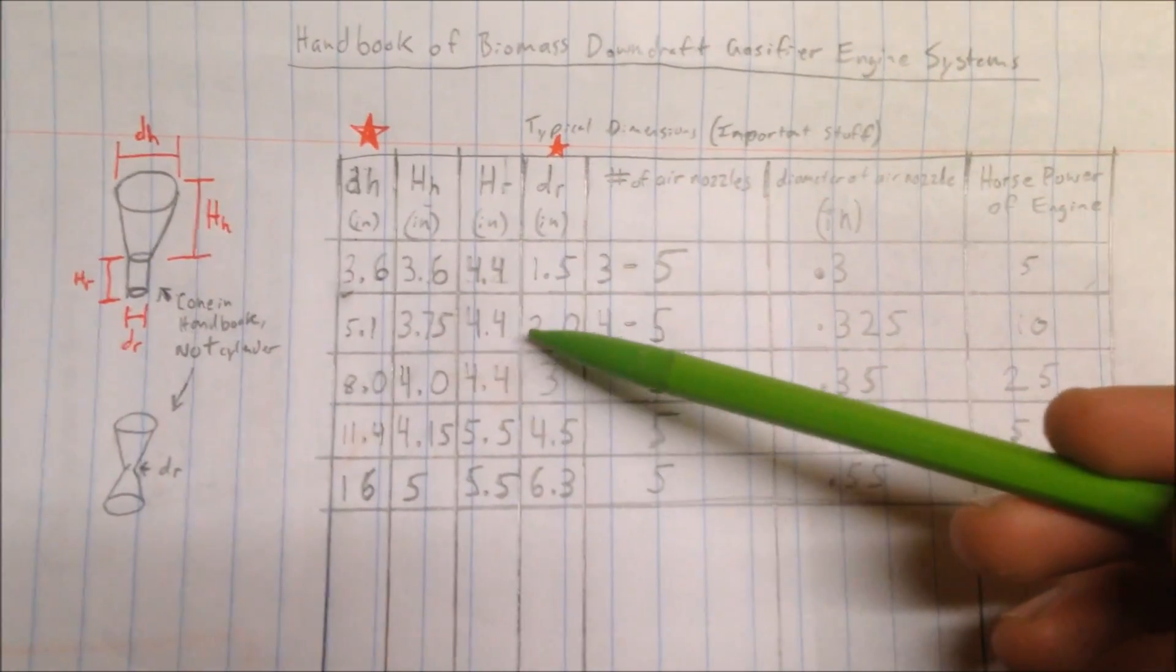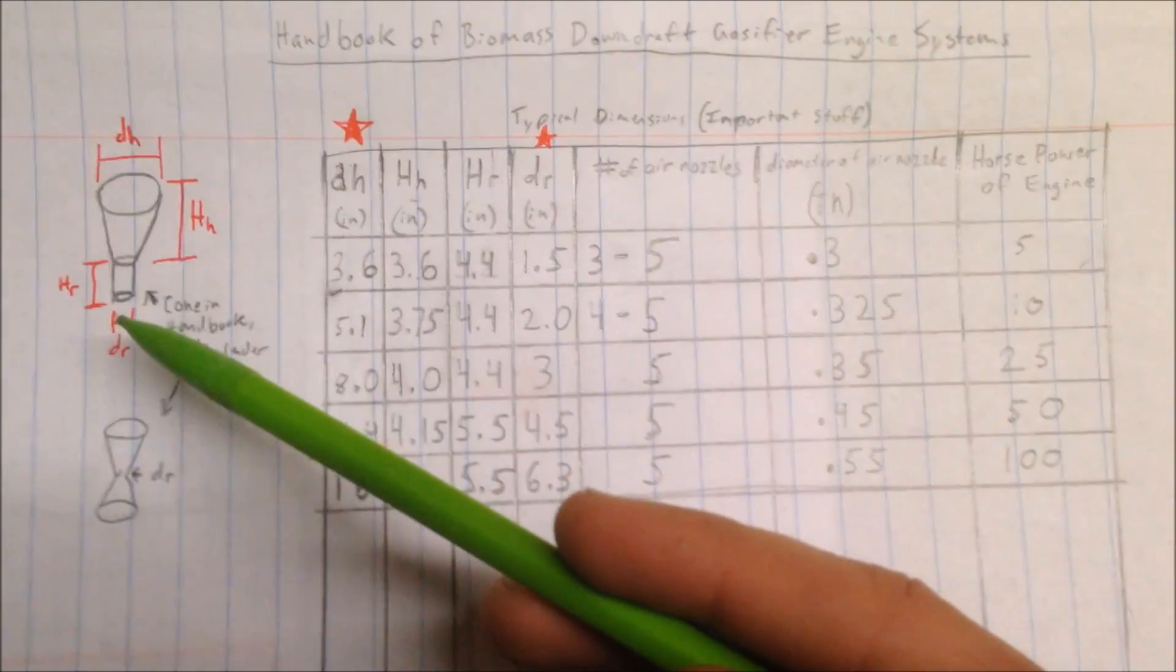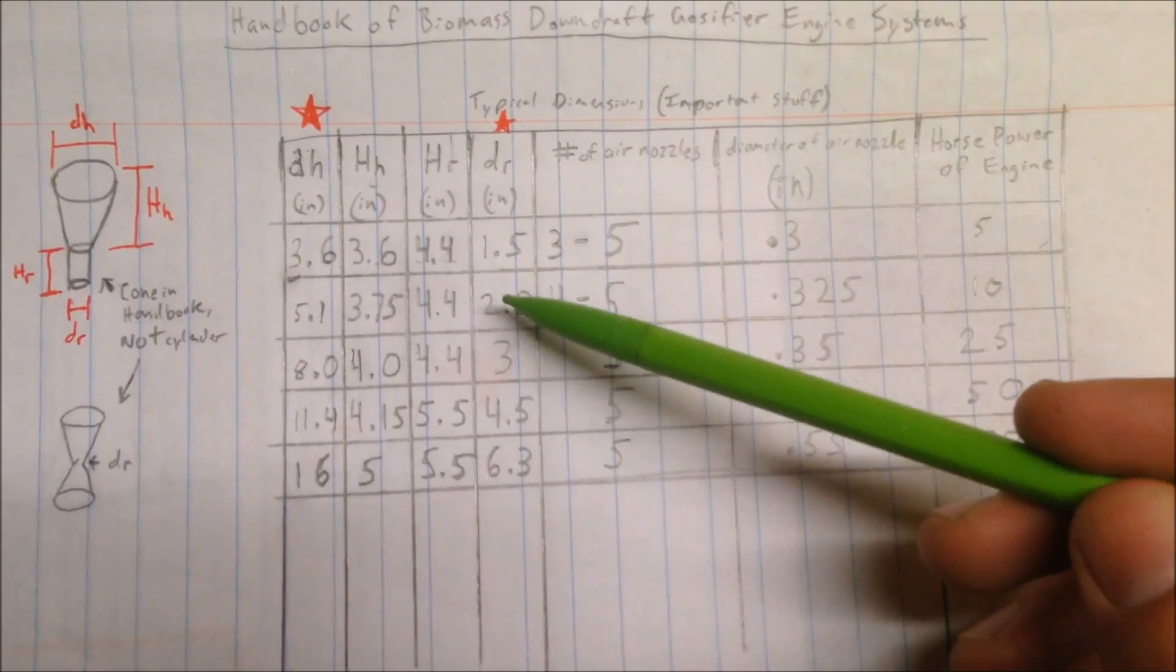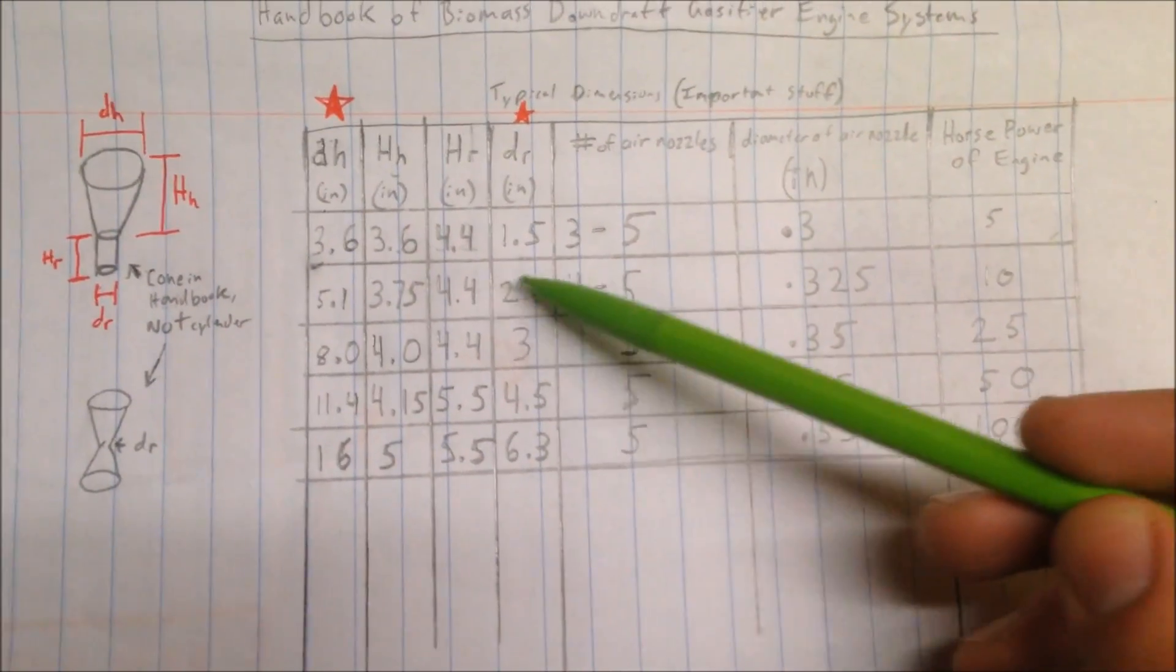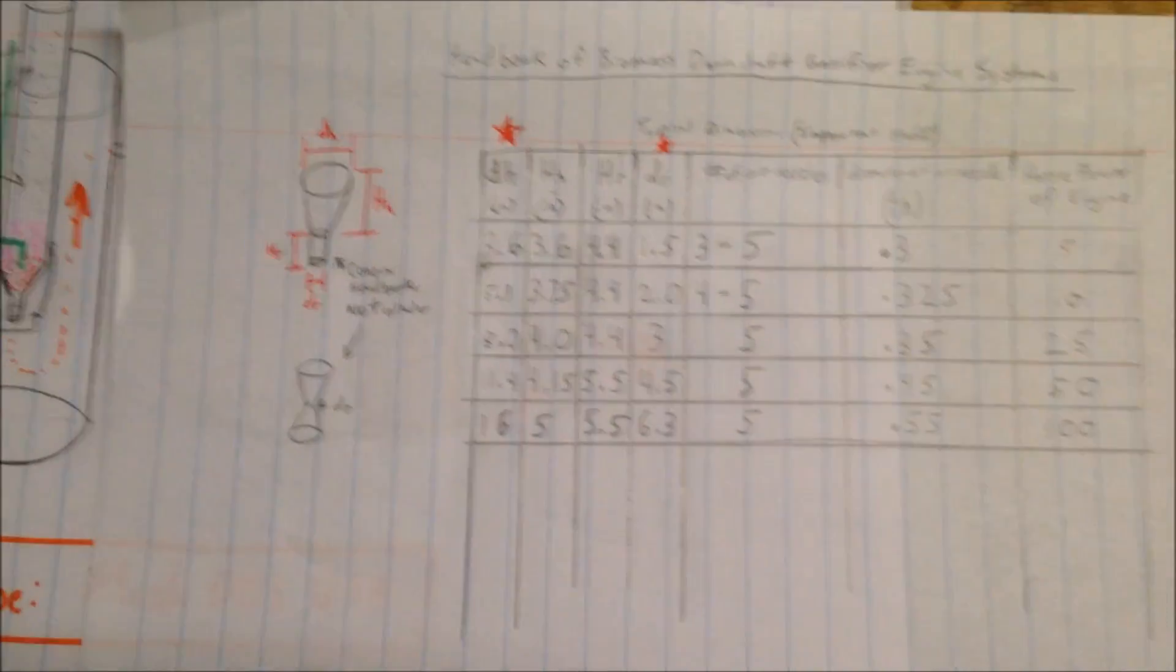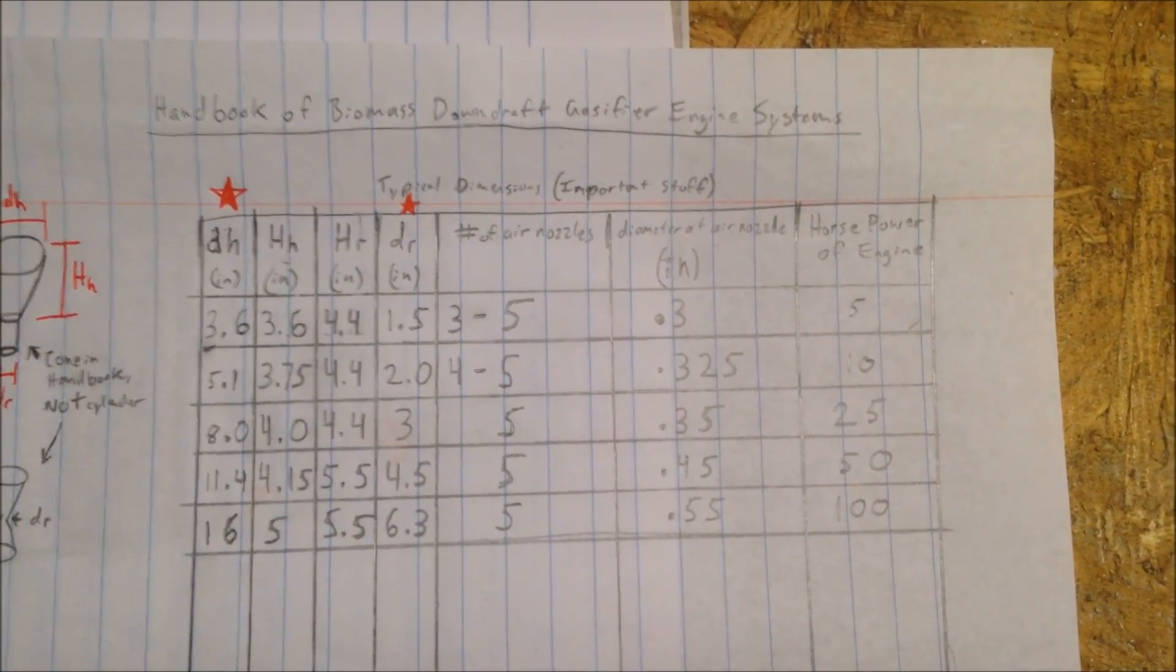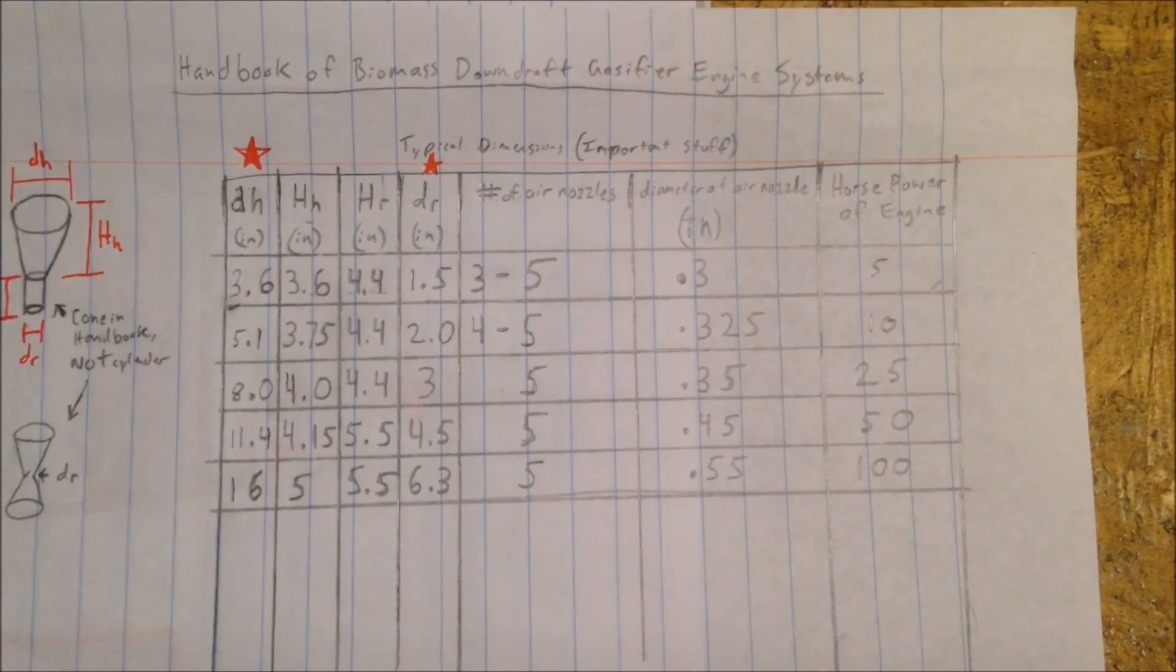And then this is most important right here: the diameter of the reduction zone right here, or right here on ember style, for a 10 horsepower engine is about two inches. It's a lot smaller than you would think, but it's true. About two inches in diameter across your final reduction zone, and then about 4.4 inches tall. I believe mine is three inches tall, but I would like to make it a little bit bigger, about 3.25 inches tall. So here's one last good look at this chart from the Handbook of Biomass Downdraft Gasifier Systems.